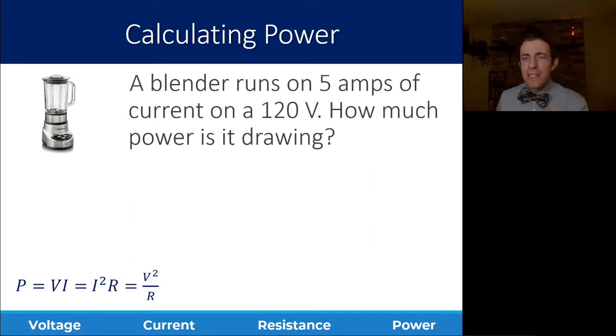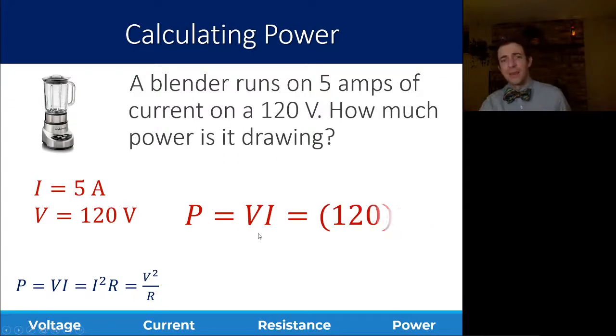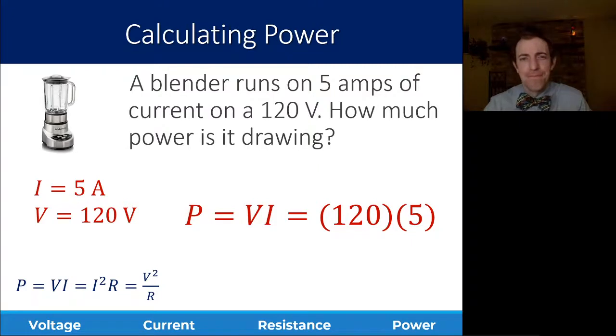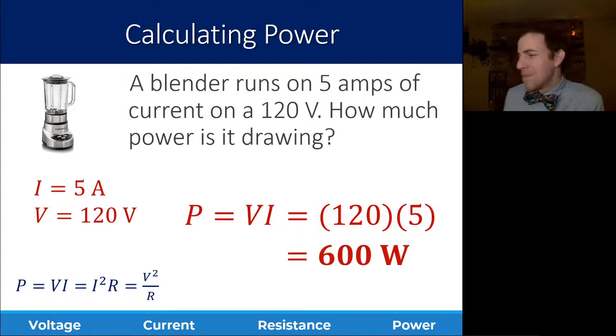And an example of what this might look like is if you had a blender running on five amps of current, you plug it into the wall. The wall in the U.S. has a potential difference of voltage of 120 volts. How much power is it drawing? Well, we look at our equations here. The power is voltage times current or current squared times resistance or voltage squared divided by resistance. I'm given the current and the voltage, which means I'm just going to use V times I. So the power is 120 times five, which is 600 watts, which is about 10 times the power of a standard 60 watt light bulb.